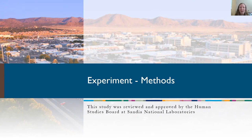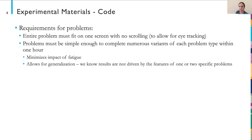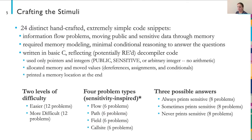So that's what we did. We conducted an experiment that was reviewed and approved by the Human Studies Board at Sandia National Laboratories. To run this experiment, we developed code problems that met certain requirements. First, the entire problem had to fit on one screen with no scrolling to allow for collection of eye tracking data. Next, the problems had to be simple enough that people could complete numerous variants of each problem type within an hour. This was done to minimize the impact of fatigue and also to allow for generalization. We made a lot of simplifications to meet these requirements, but that allowed us to really control our code snippets and get rid of uncertainties associated with real binaries, focusing on memory modeling.